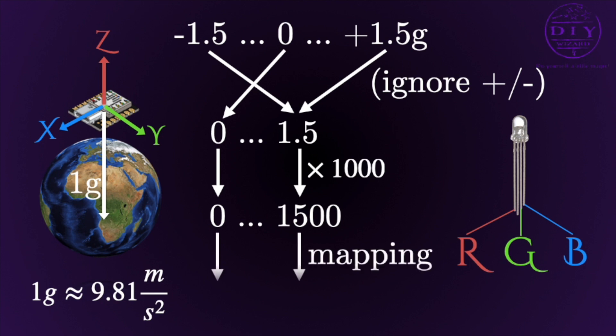And the LED needs values from 0 to 255. So what I do here is called a mapping. I let the program map the values from 0 to 1500 to values between 0 and 255. And now I can give this value, for example, to the red value.